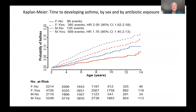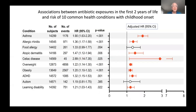Here is a Kaplan-Meier plot of the time to developing asthma by sex and by antibiotic exposure. This plot begins at age two — the exposure period is over — and we're now looking at cases of asthma. The red lines are girls: those who did not receive antibiotics in the first two years and those who did. The blue lines are boys without antibiotics and boys with. You can see that both curves have been shifted upward — consistent with many other studies. We looked at 10 common health conditions: inflammatory and allergic conditions, metabolic conditions, and neuropsychiatric conditions. The adjusted hazard ratio shows that for eight of the 10, the associations are statistically significant.